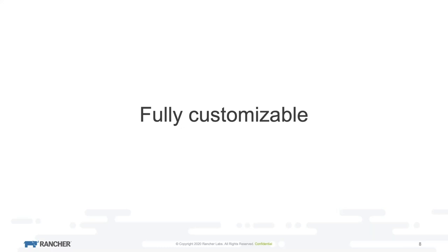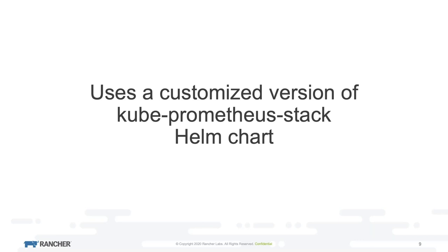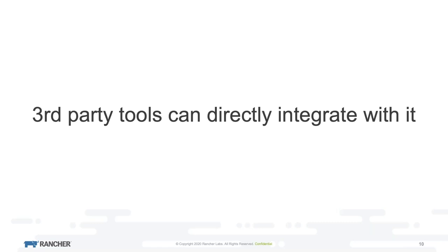V2 monitoring is fully customizable: it brings a lot out of the box, but you can customize it with your own dashboards, alerts, and metrics for your own services — and you can do this much easier than with V1 monitoring, especially in terms of alerting. To provide all that, V2 monitoring uses a customized version of the Kube Prometheus Stack Helm chart. Since it's very customizable, it's also possible to directly include third-party tools, like database operators, so that even other Helm charts supporting Prometheus will directly pop up without any extra configuration.